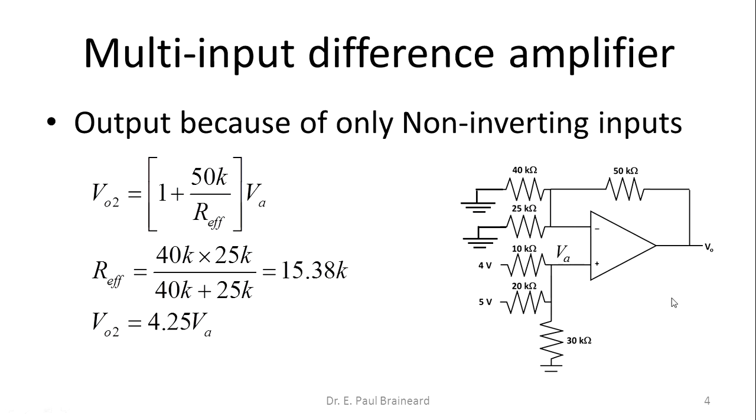Let us find out the output voltage expression because of the voltage VA. Let me call this voltage at this point as VA. Because of this voltage VA, the output voltage of this non-inverting amplifier configuration V02 equals 1 plus Rf by R1 times VA, which equals 4.25 times VA.